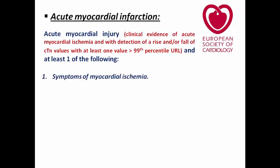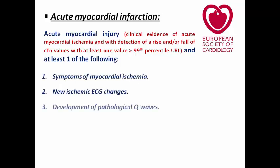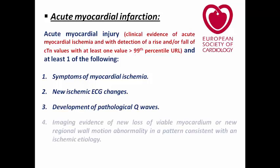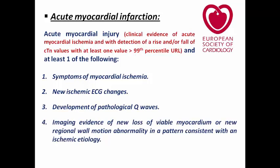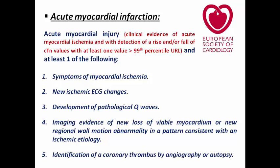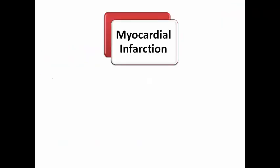Either symptoms of myocardial ischemia, new ischemic ECG changes, development of pathological Q-wave in surface ECG, imaging evidence of new loss of viable myocardium or new segmental wall motion abnormality in a pattern consistent with ischemic etiology of a specific territory, or identification of coronary thrombus by angiography or autopsy. We have two types of MI.